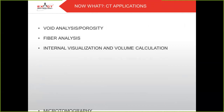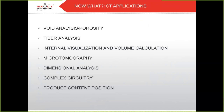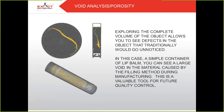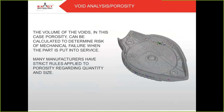So what applications can CT scanning be used for? You can perform void analysis, fiber analysis, check internals and volume calculations, perform microtomography, and so on. In void analysis, exploring the complete volume of an object allows you to see defects that would traditionally go unnoticed. For example, in a simple container of lip balm, you can see a large void in the material caused by the filling method during manufacturing — a valuable tool for quality control. The volume of voids, such as porosity, can be calculated to determine risk of mechanical failure when the part is put into service. Many manufacturers have strict rules regarding porosity quantity, size, and location.